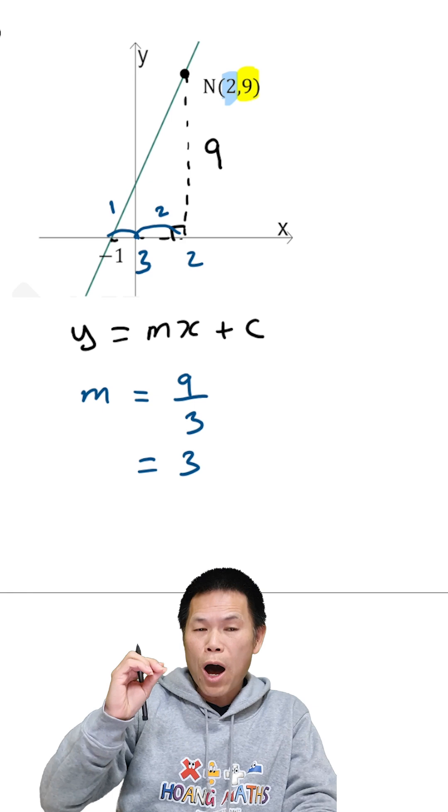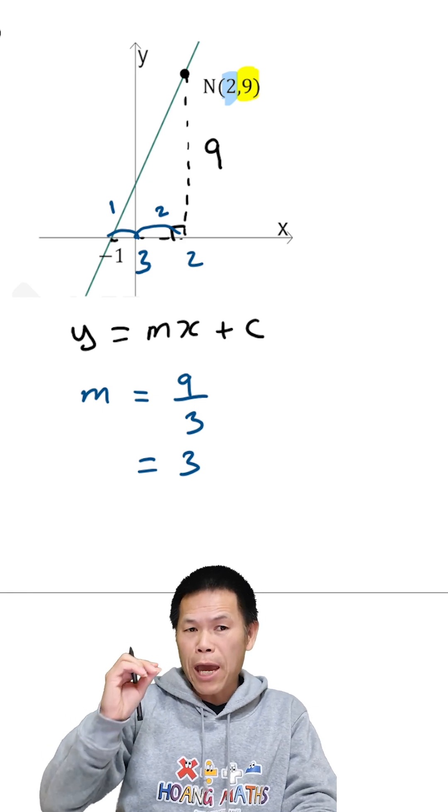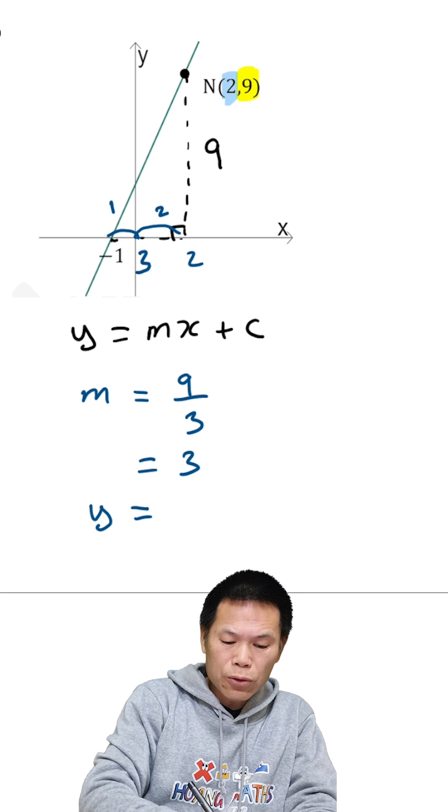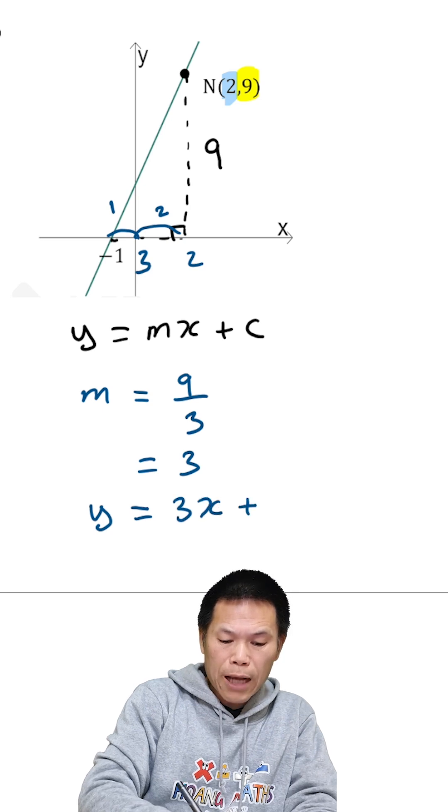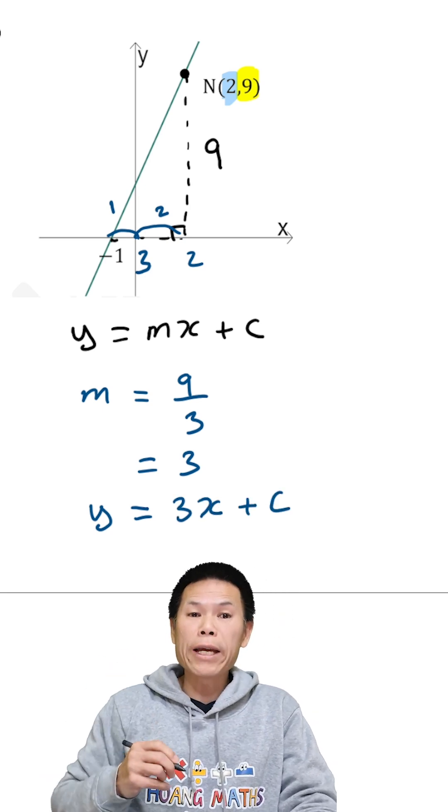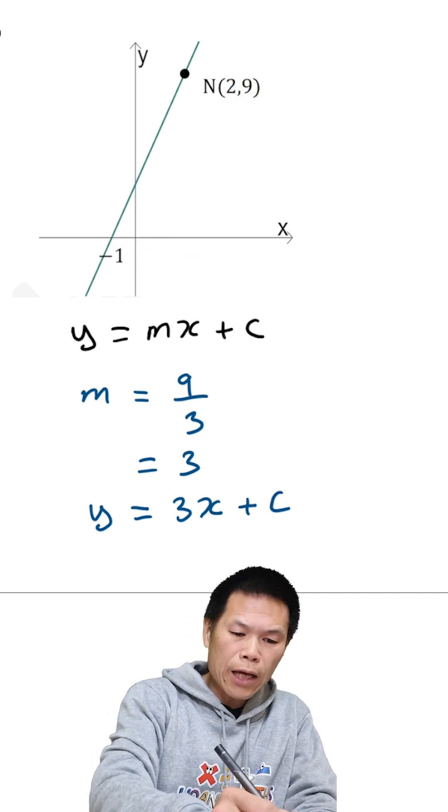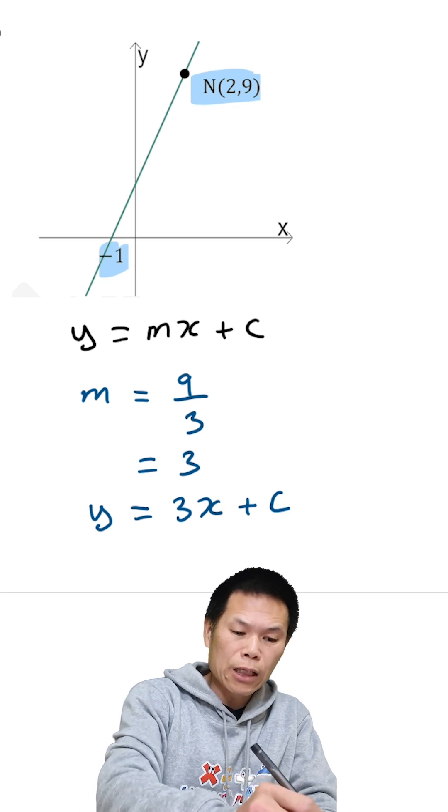So that becomes y equal to mx become 3x. Y equal to 3x plus c. C is the y-intercept, but we haven't got the y-intercept. So therefore, we can either use this point or this here. This point.